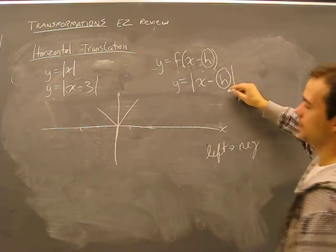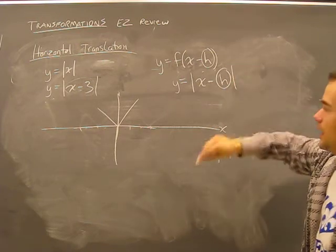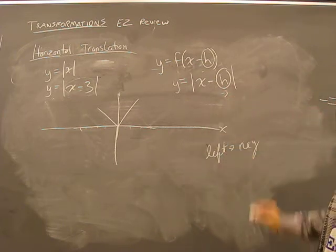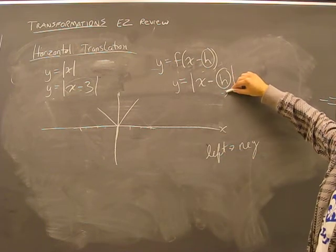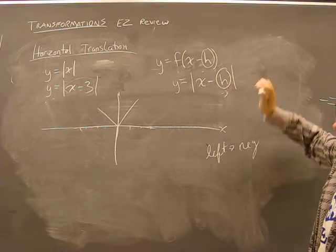But h, because I'm moving three units left, negative. h is negative. H is minus three. I'm moving three units left. That's my h. My h is my displacement.